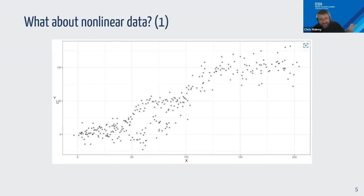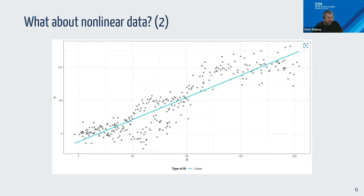But what if you have something more sigmoidal — wider in one part, quite narrow in another, like an inverse Z? If we fit a regular linear model we end up with negative numbers in some areas, and in some portions we're really under-predicting — no points below the line — while elsewhere the line sits in the middle of two clear clusters.